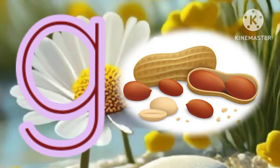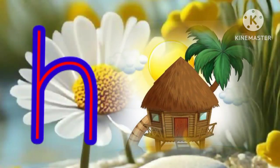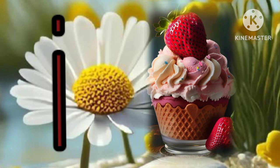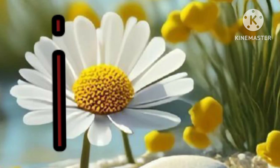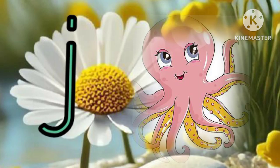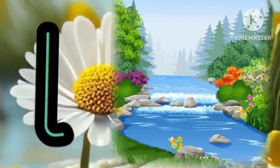G for groundnut, H for hut, I for ice cream, J for jellyfish, K for kangaroo, L for lake.